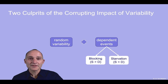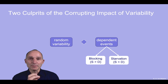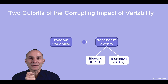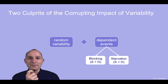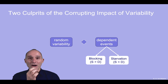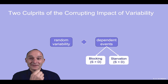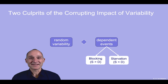This highlights the two culprits of the impact of variability. Notice variability by itself in one stage is not an issue. However, if there are dependent events in conjunction with the variability, that may lead to either blocking or starvation. Blocking means that the supply of a station exceeds the capacity of that station. Similarly, starvation means that the supplying capacity is less than the demanding capacity.